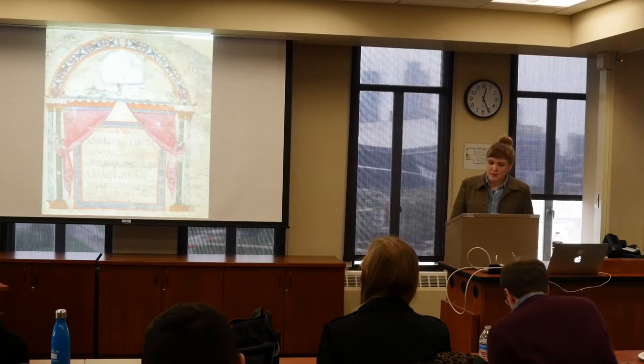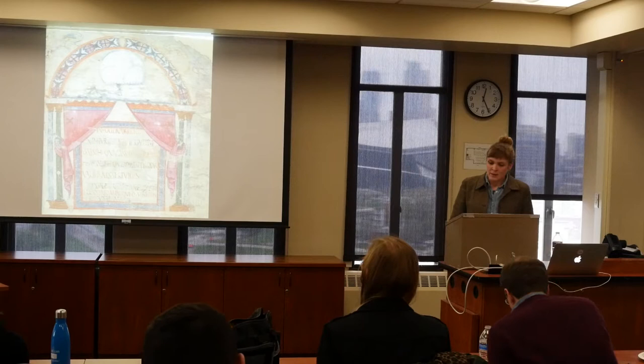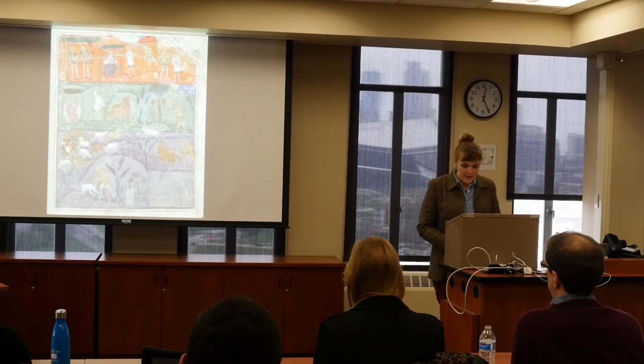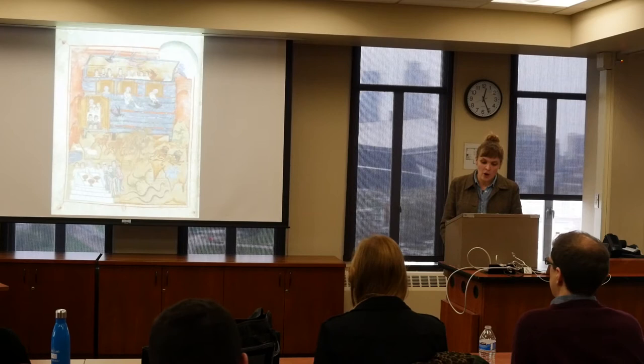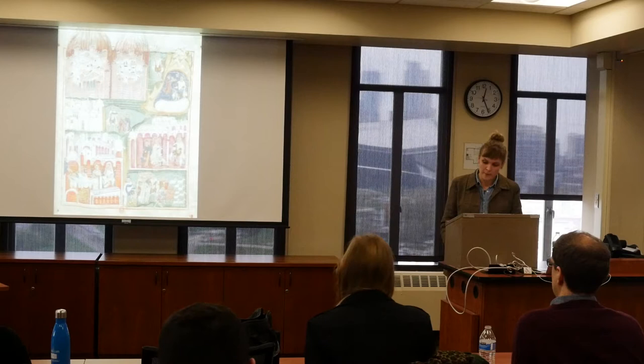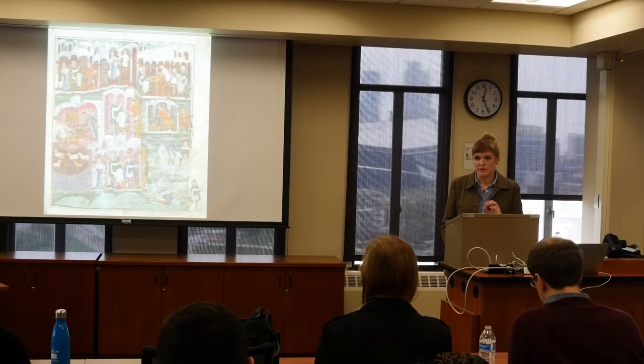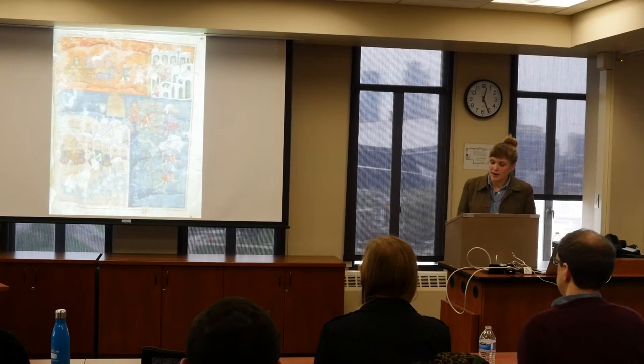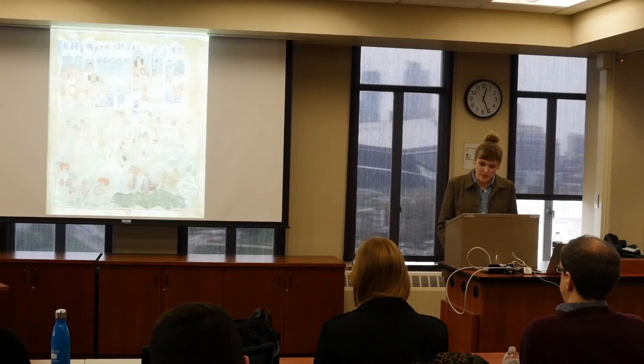Of the Ashburnham Pentateuch's original 69 miniatures, only 19 survive, and I'm going to do a really quick flash through all of them. 16 are full-page paintings, three are less than a full page. Their scenes are almost always arranged in registers, although the individual scenes are frequently presented out of sequential order. Therefore, the reader would need to be familiar enough with the biblical narrative to be able to reassemble the images, so to speak. Depicting scenes from the lives of Adam and Eve, Noah, Abraham, Joseph, and Moses, these miniatures are densely packed with men and women, animals, architectural settings, and descriptive inscriptions.